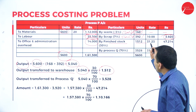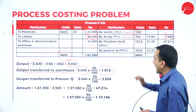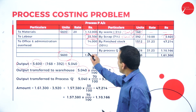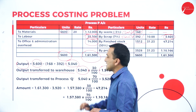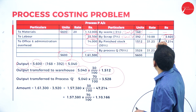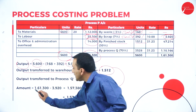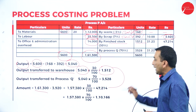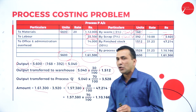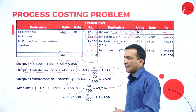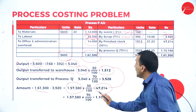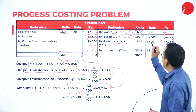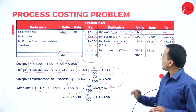To find the rate, we work on a value basis. The total debit side is ₹1,61,300. From this we already recovered ₹3,920 (scrap). The difference is ₹1,57,380. Taking 30 percent of ₹1,57,380 gives ₹47,214 — this is the value going to the finished stock.